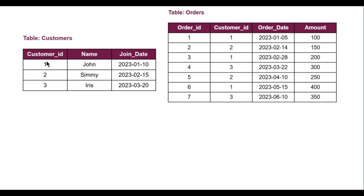For the customers table, there are three columns: customer_id, which is the unique identifier for each customer; name, which is the name of the customer; and join_date, which is when the customer joined. For the orders table, there are four columns: order_id, the unique identifier for each order; customer_id, the id of the customer who placed the order; order_date, the date of the order; and amount, the order amount in dollars.